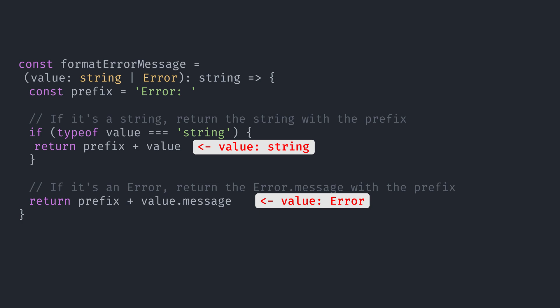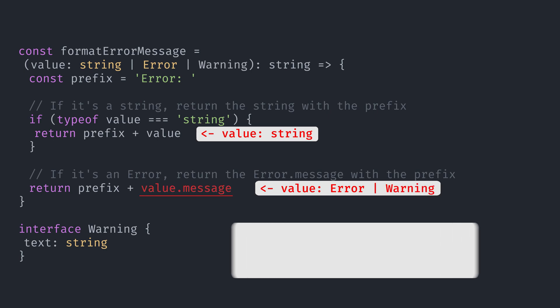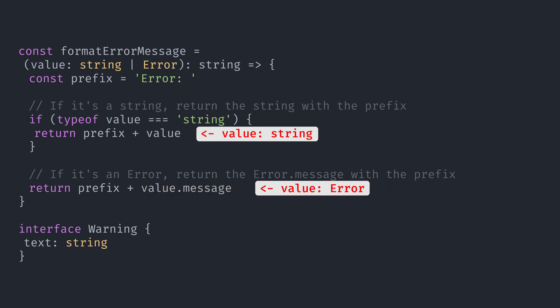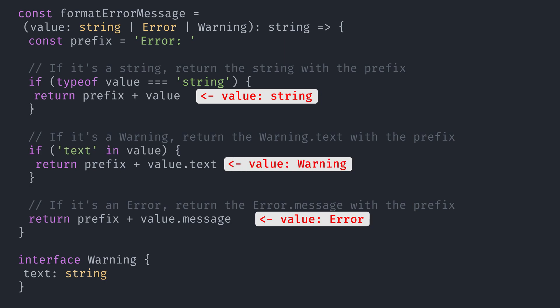Sometimes we're not so lucky. Let's add a new type to our function: a custom interface called Warning. Now our code is broken. Before, our value variable could only be an error after the if statement, but now it can be an error or a warning, and the message property does not exist in a warning. The typeof operator won't help us here because typeof value would be object for both cases. One of the idiomatic ways of handling that situation in JavaScript would be to check if value has the text property.